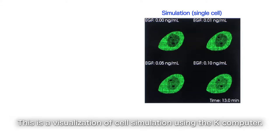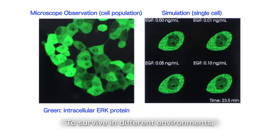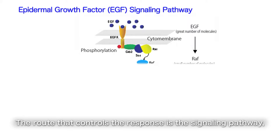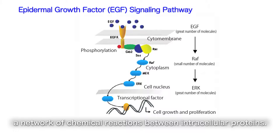This is a visualization of cell simulation using the K-computer. The green part represents intercellular proteins. To survive in different environments, cells have an ability to respond to the environment appropriately. The route that controls the response is the signaling pathway — a network of chemical reactions between intracellular proteins.